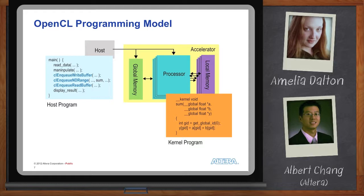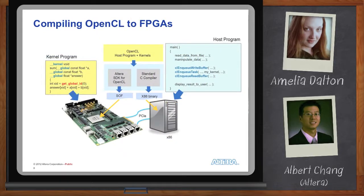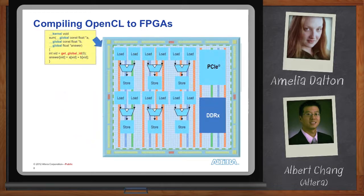OpenCL also allows you to control memory management within the kernel on the hardware accelerator. On the host side, any standard C compiler can take your host code and generate an x86 binary. On the kernel side, Altera provides an SDK for OpenCL, which includes a compiler that takes your kernel code and generates a programming file. The compiler takes care of synthesis, clustering, placement, routing, and timing closure — all of that is handled for you so you can use the OpenCL programming model to target an FPGA.